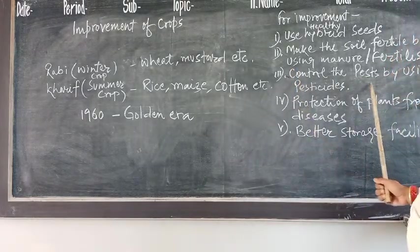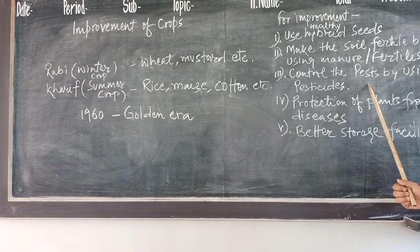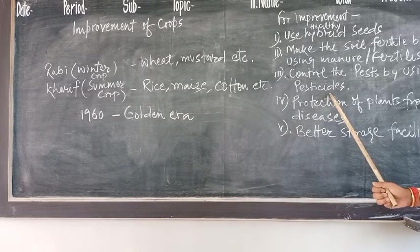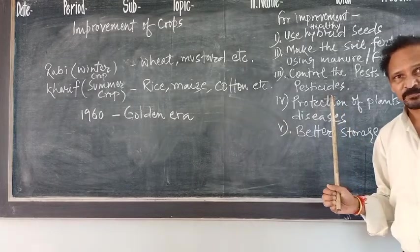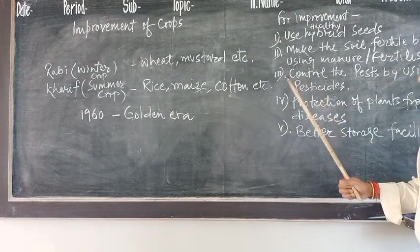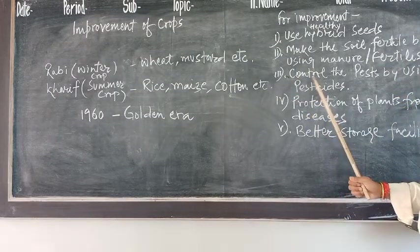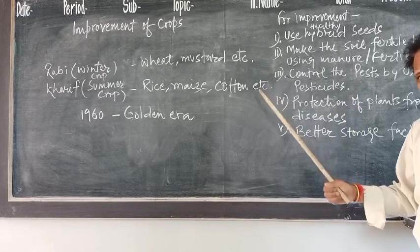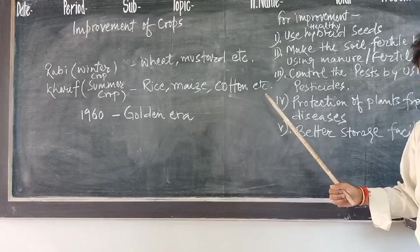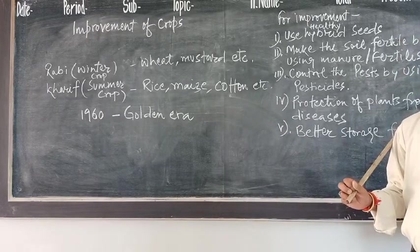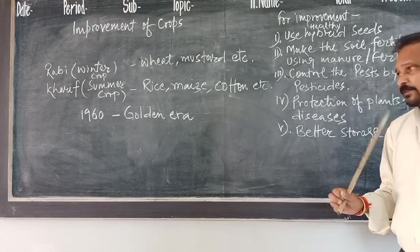The third step is: control pests by using pesticides. This is also very important for overall crop production improvement. The next step is: control the weeds from crops by using various weedicides which are available in the market.